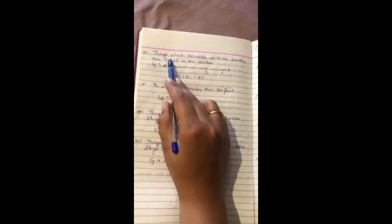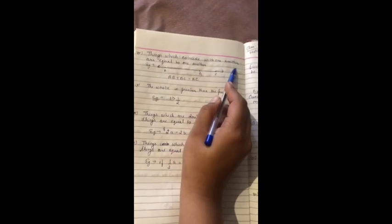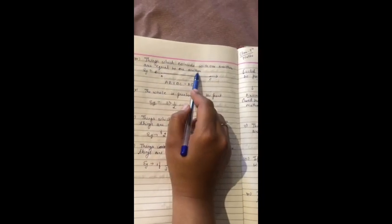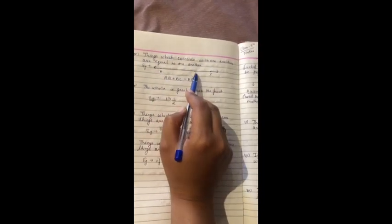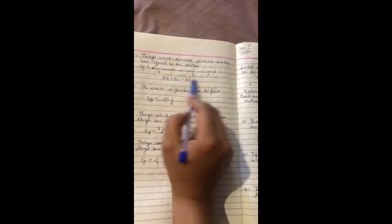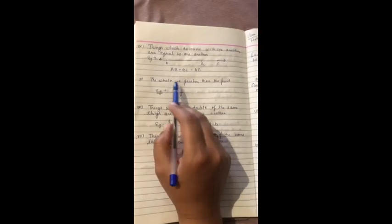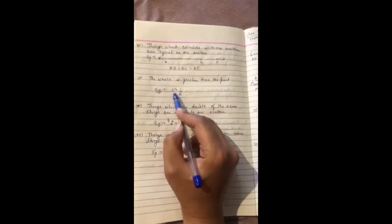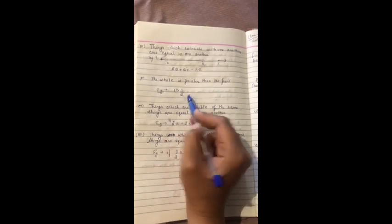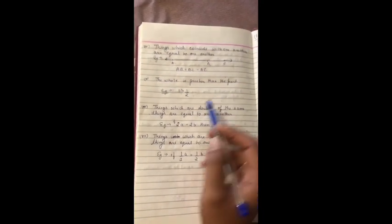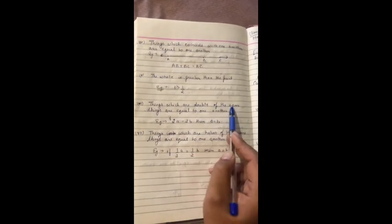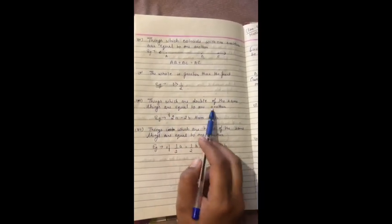Next, fourth: things which coincide with one another are equal to one another. That means AB plus BC are equal to AC. That is the fourth axiom. Fifth: the whole is greater than the part. That is universal truth. Things which are double to the same thing are equal to one another.